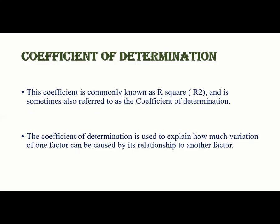R squared is a statistic used in the context of statistical models whose main purpose is either the prediction of future outcomes or the testing of hypotheses. In simple words, R squared describes how the difference in one variable can be explained by the difference in a second variable.